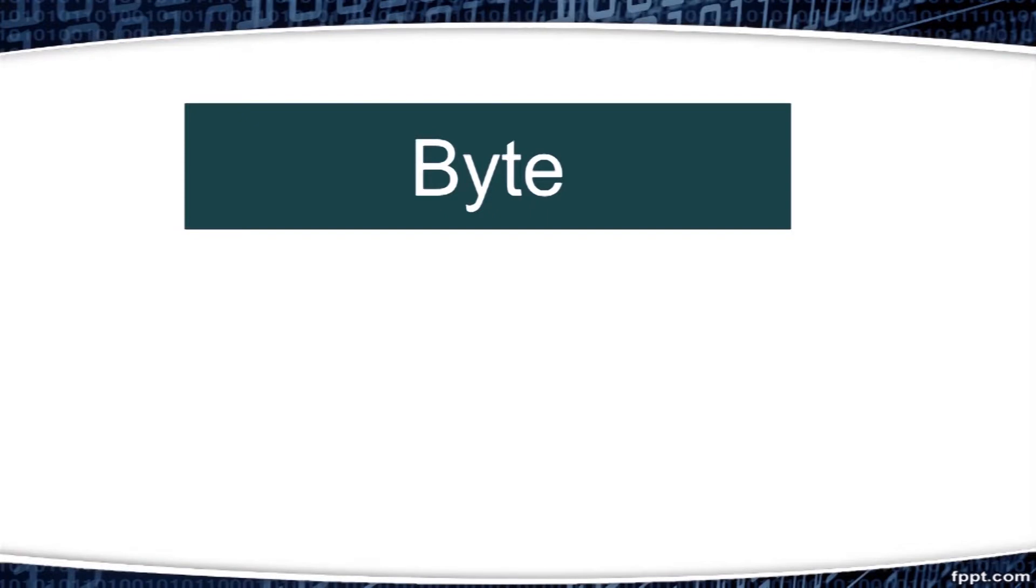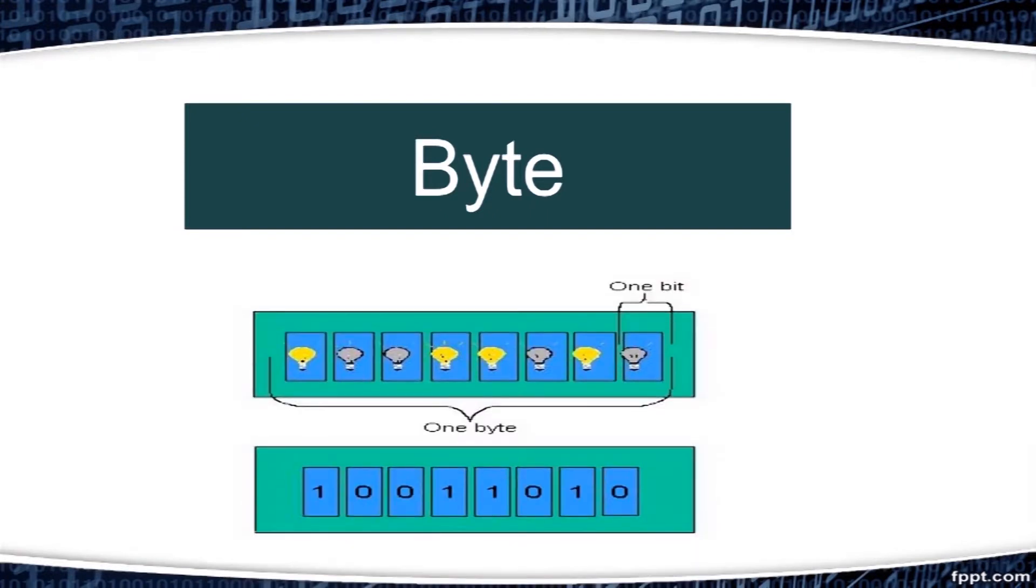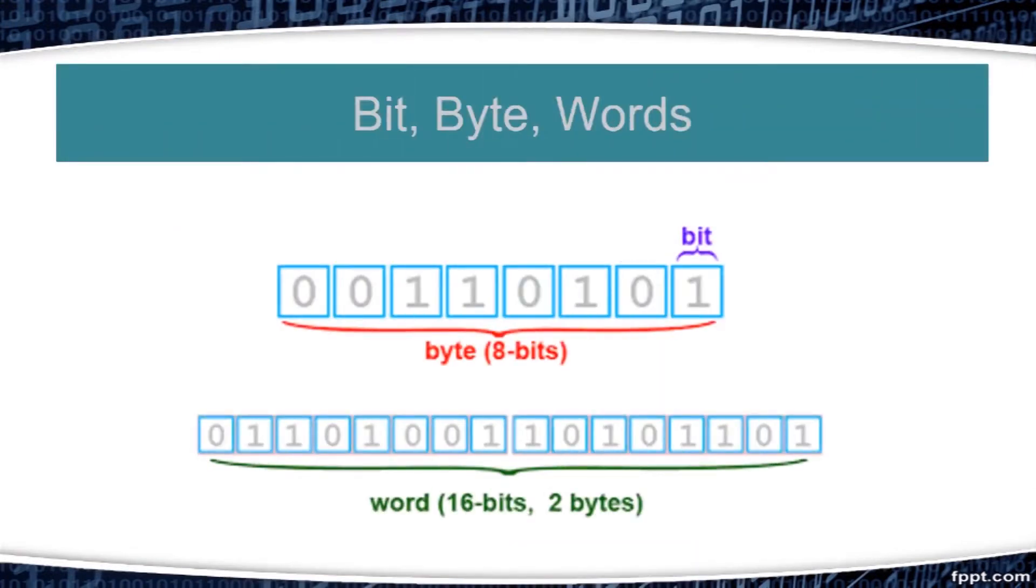Next is word. It is the smallest unit that can be addressed. Its size depends upon the processor. It can be 8-bit, 16-bit, 32-bit and so on.